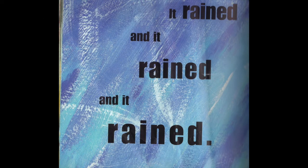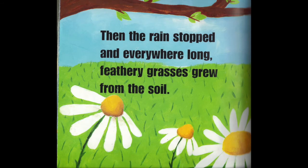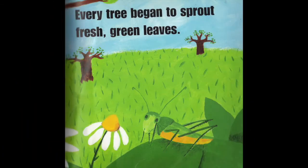It rained, and it rained, and it rained. It rained until every river gushed and gurgled. It rained until every water hole was full. Then the rain stopped, and everywhere long, feathery grasses grew from the soil. What do you notice about the tree now? What color is the grass? What about the sky? Every tree began to sprout fresh, green leaves.